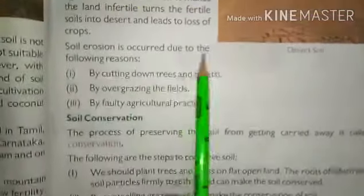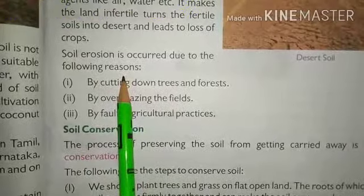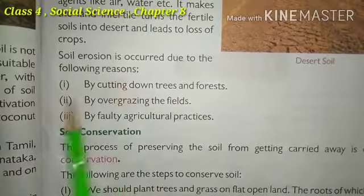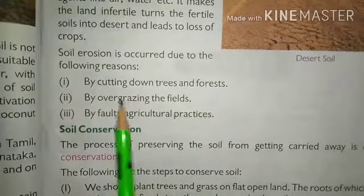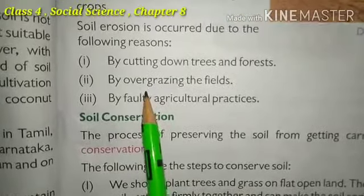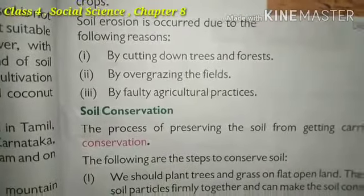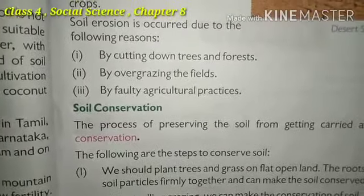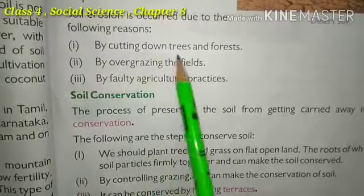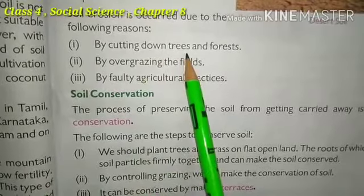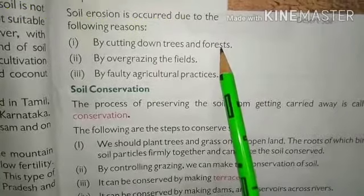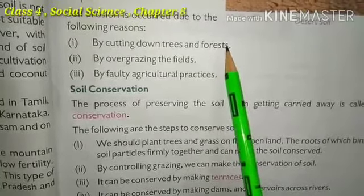Soil erosion occurs due to several reasons. Number one is by cutting down trees and forests. As we all know, trees and forests bind the soil together. When trees are cut down, there is nothing to hold the soil, which leads to soil erosion and waste of the soil.